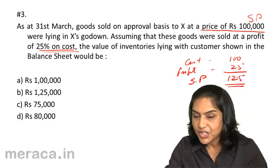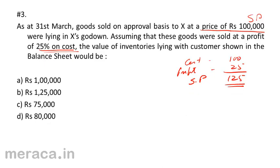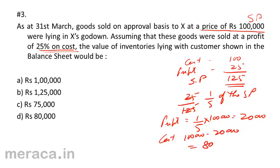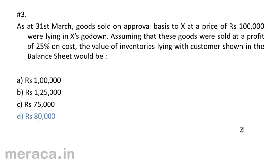Therefore, the relation of profit to cost is 25 by 100, while the relation of profit to sales is 25 by 125, or one-fifth of the selling price. The sales value is Rs. 1,00,000, so profit would be one-fifth of Rs. 1,00,000, equal to Rs. 20,000. Cost would be Rs. 1,00,000 minus Rs. 20,000, equal to Rs. 80,000. Therefore, the value of inventories should be Rs. 80,000, that is option D. So 3D would be the correct answer.